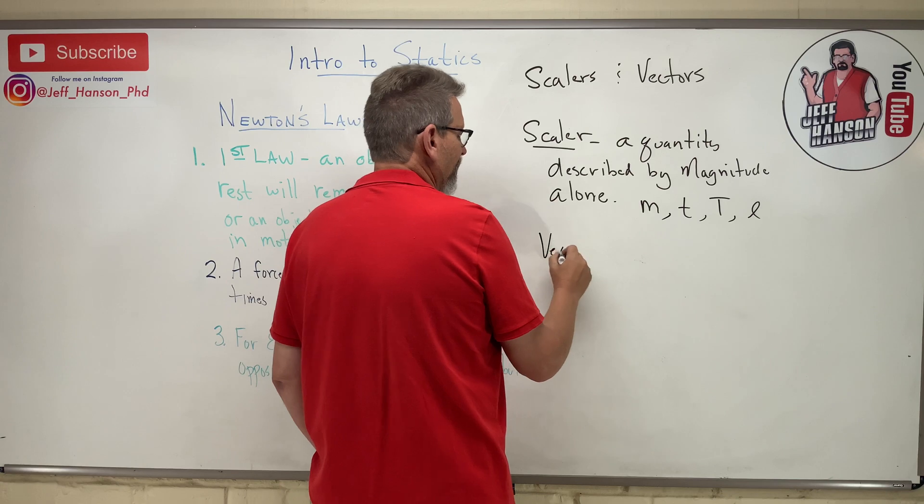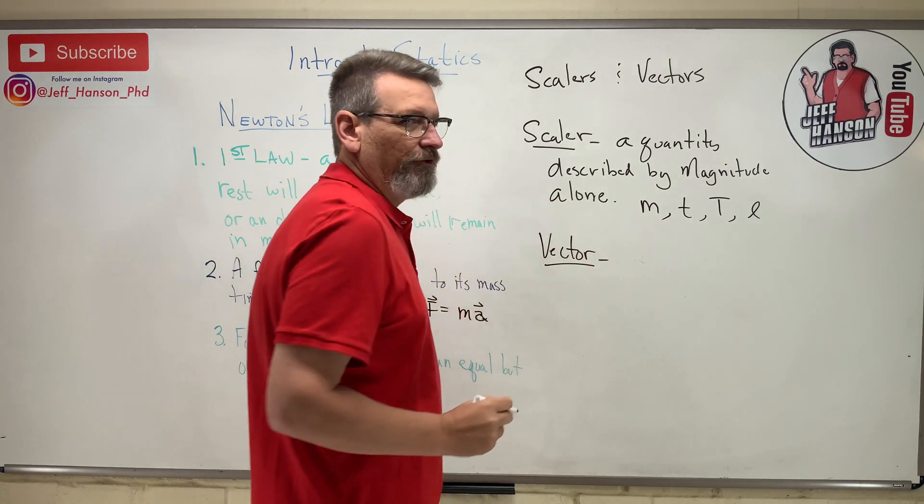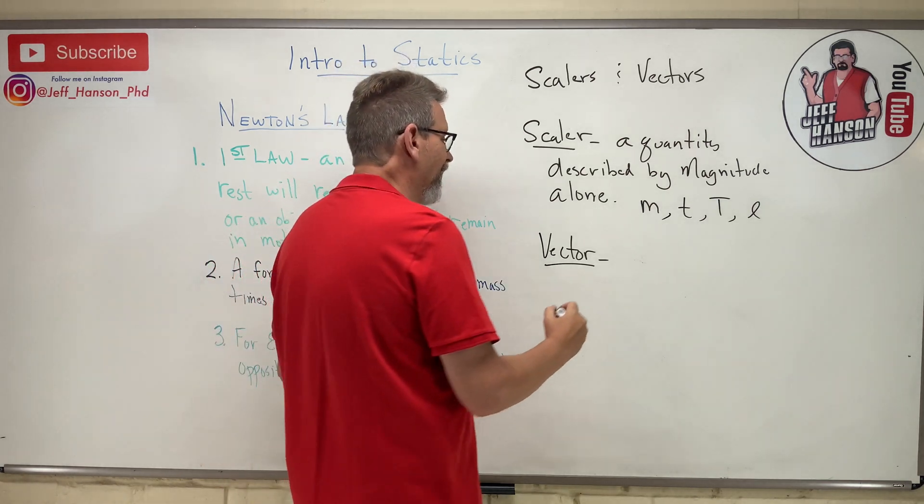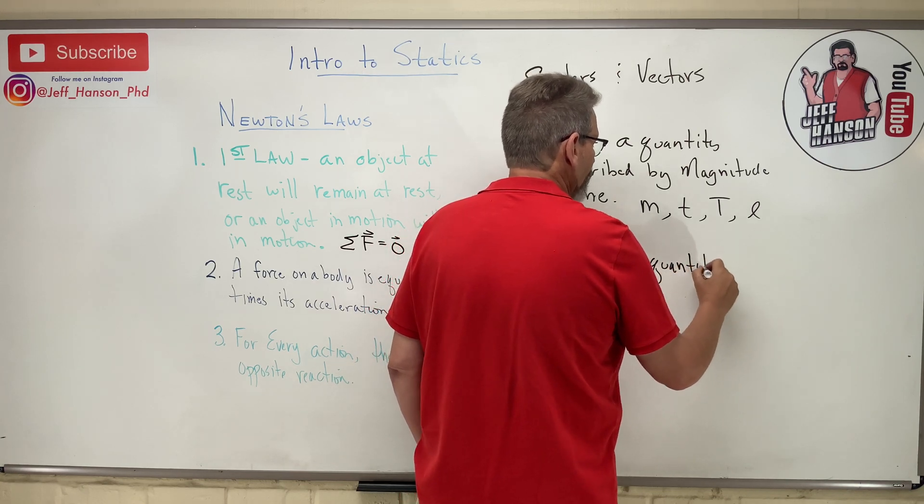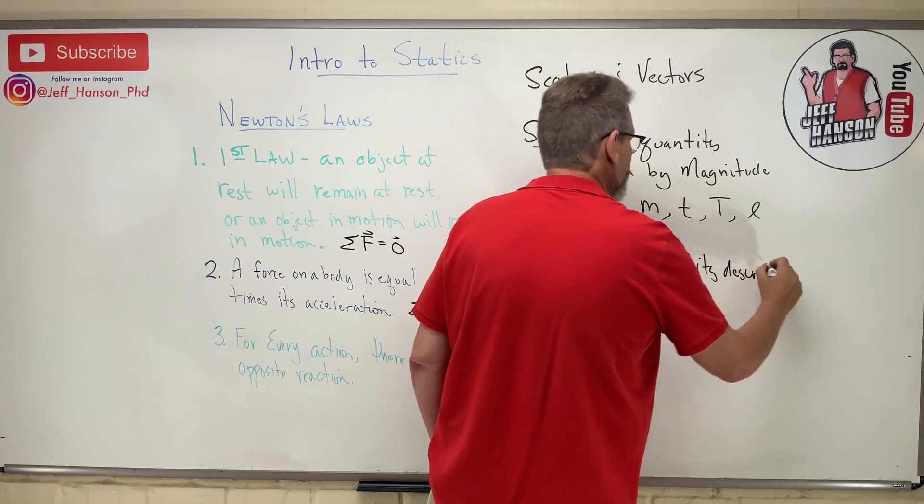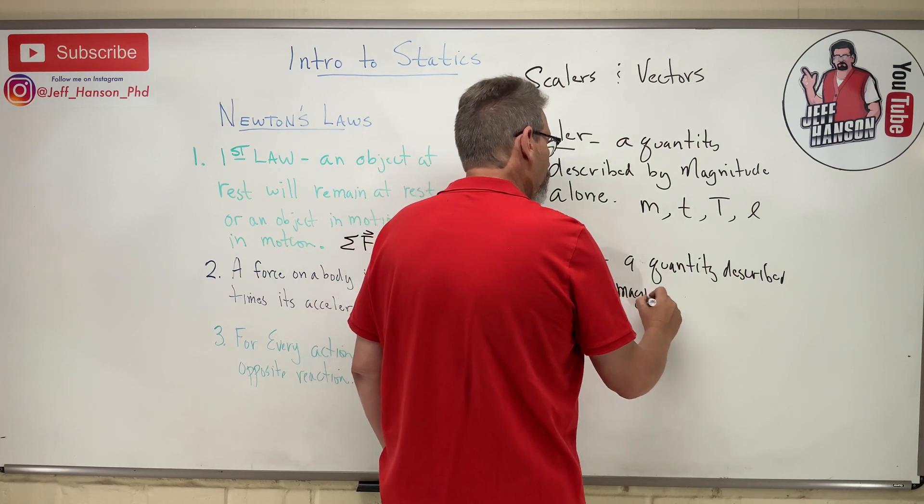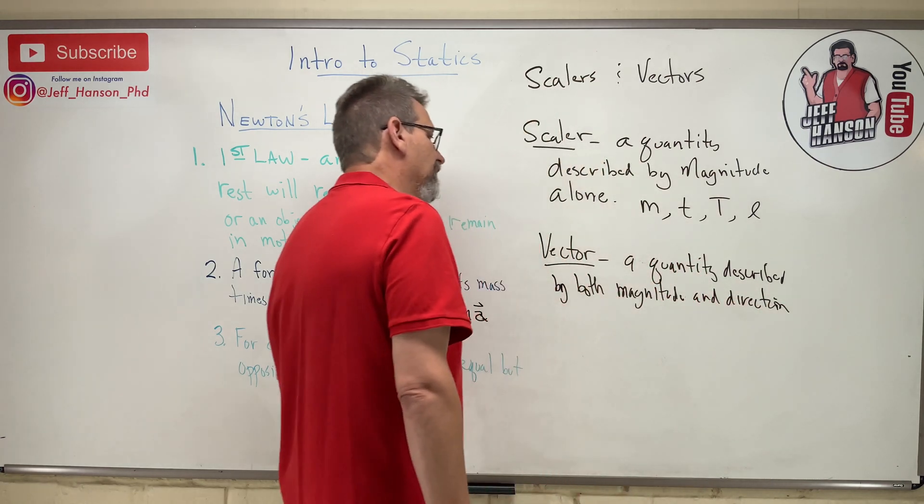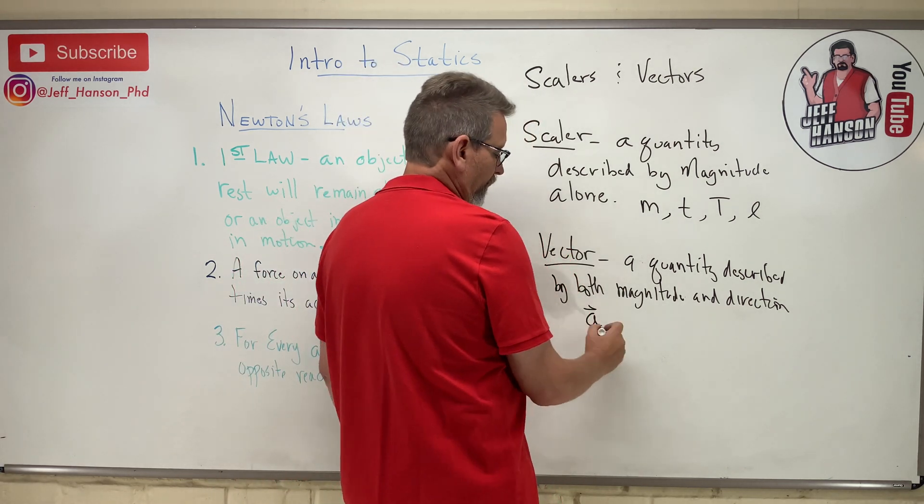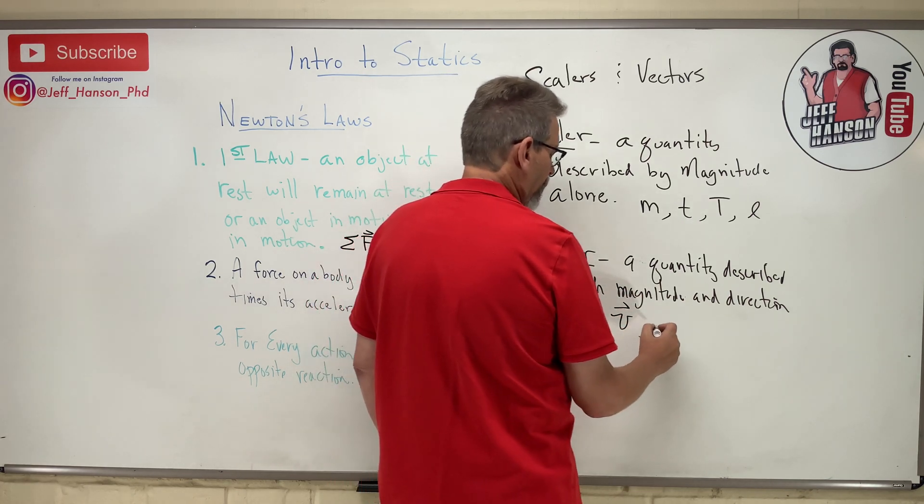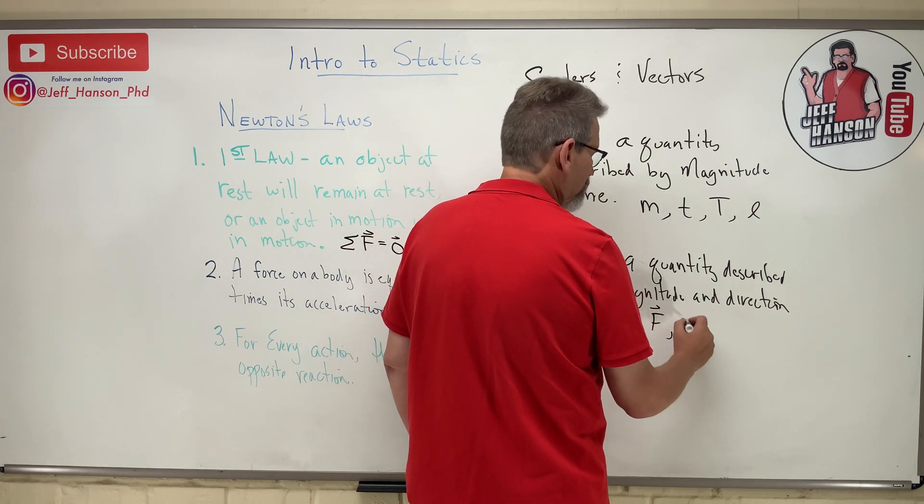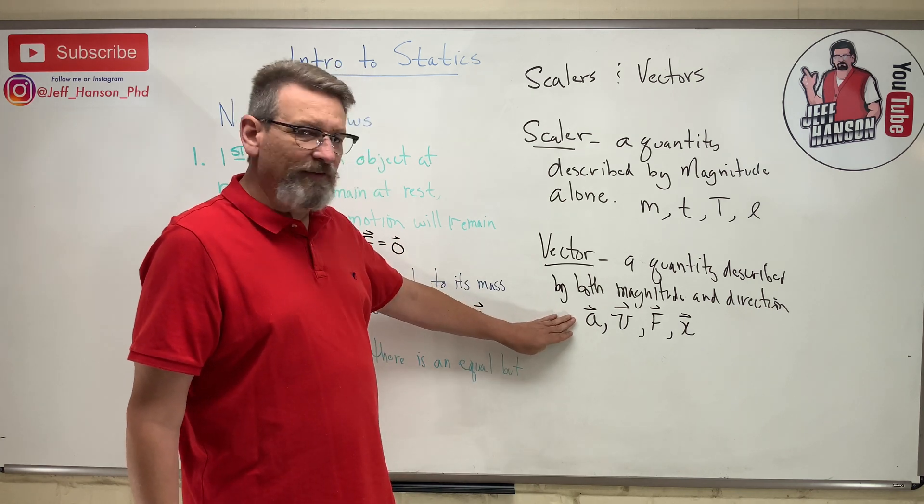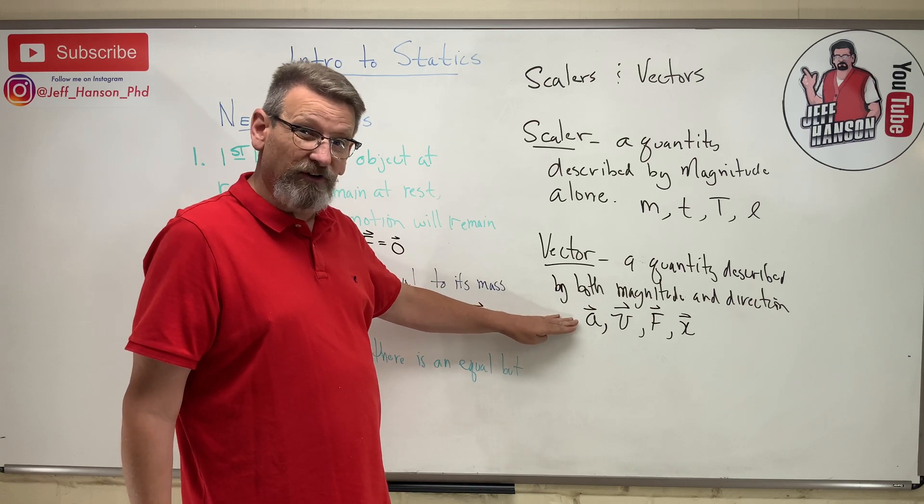Next, you have a vector. What is a vector? Most students remember this from the Despicable Me movie because the little guy's name was Vector because he had magnitude and direction. So a quantity described by both magnitude and direction. And some examples of a vector quantity might be something like acceleration, velocity, force, displacement. I'm moving so far in a certain direction. So those would be some vector quantities. These are some things that we're going to talk about in statics.